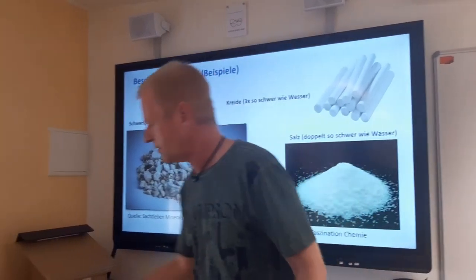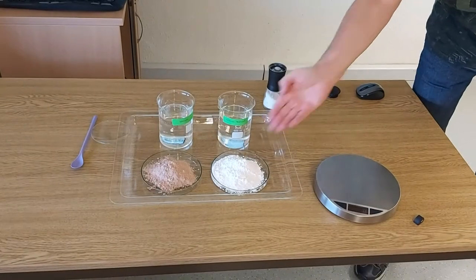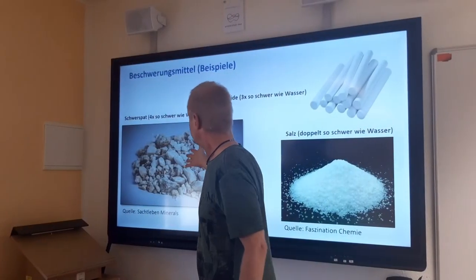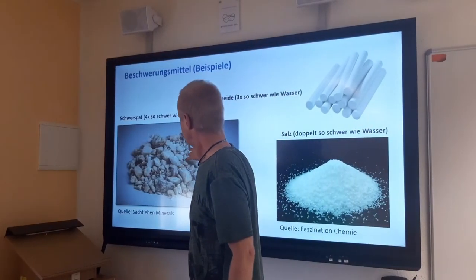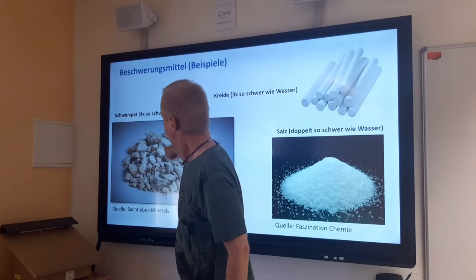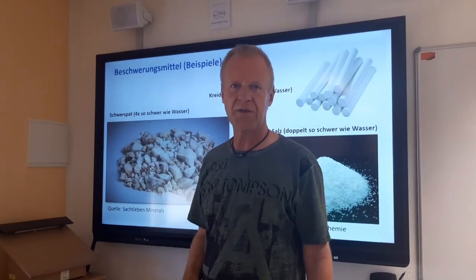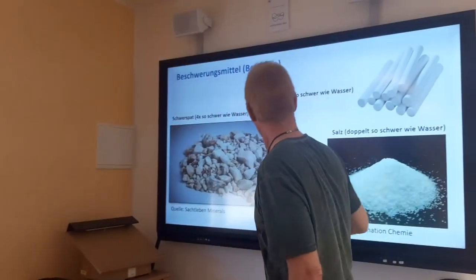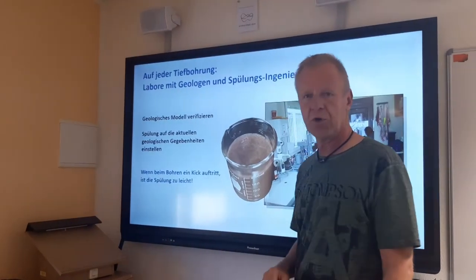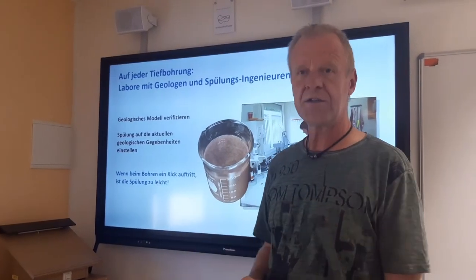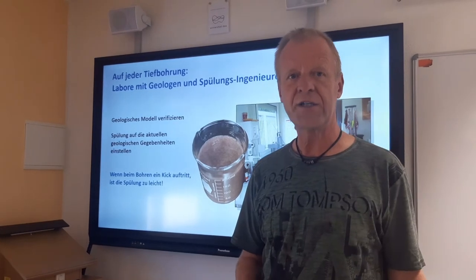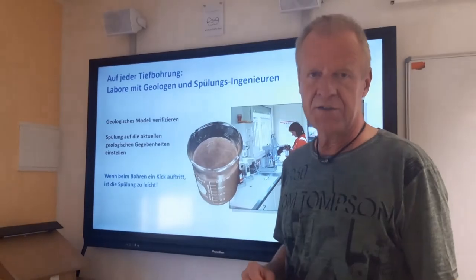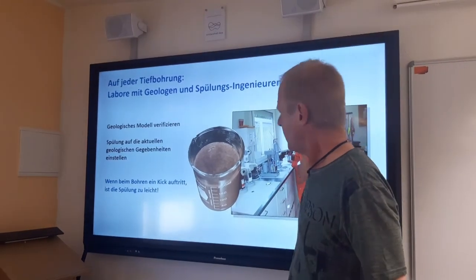If the weight of the salt water is not enough, we can dissolve some chalk in the water. The density of chalk is three times the density of water. This will increase the density of the mud accordingly. And if that is still not enough, we can dissolve some stone powder in the mud, for example, barite. Barite is even four times heavier than water. We can see the sample here. So we can adjust the pressure in the borehole so that no gas enters from the formation into the borehole.